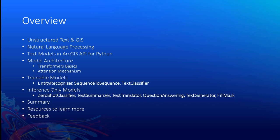Let's look at the overview of the session today. First, we will be talking about unstructured text and its use in GIS. Then we will talk about what is natural language processing and what models we have available for handling natural language in ArcGIS API for Python. Then we will take a deeper dive into the model architecture. After that, we will look at two different categories of models in ArcGIS Learn: trainable and inference-only. And then we will summarize the session.